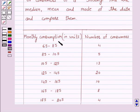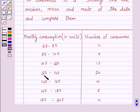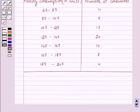Monthly consumption in units and number of consumers. For 65 to 85, number of consumers are 4. For 85 to 105, it is 5. For 105 to 125, it is 13. For 125 to 145, it is 20. For 145 to 165, it is 14. For 165 to 185, it is 8. And for 185 to 205, it is 4.